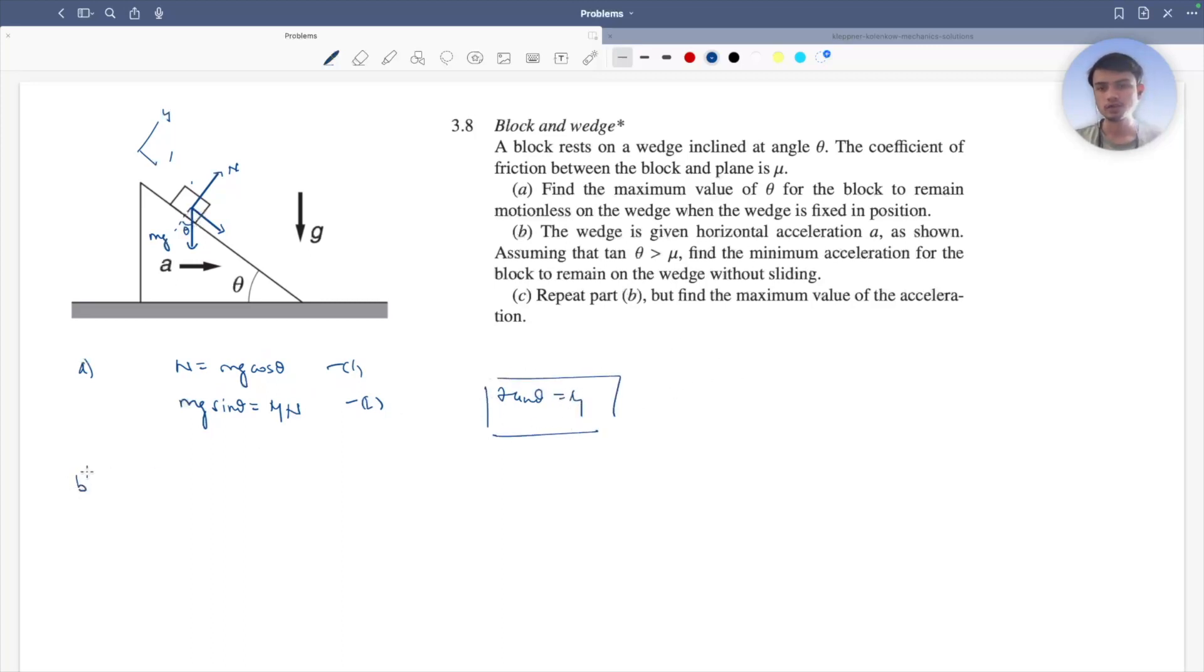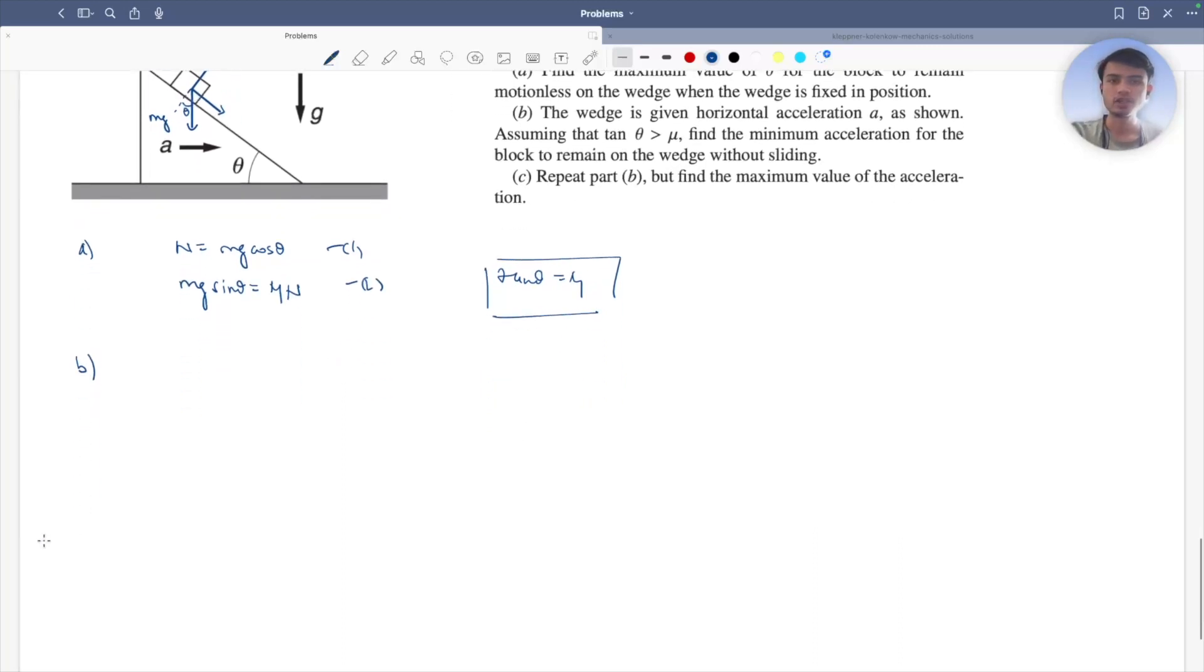Now let's move on to the next problem which says the wedge is horizontally accelerated as shown in the figure and assuming tan theta is greater than mu, find the minimum acceleration for the block to remain on the wedge without sliding.